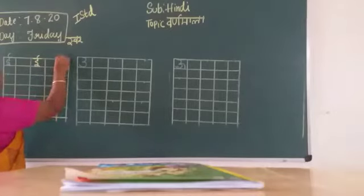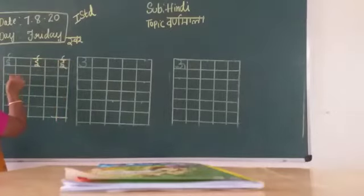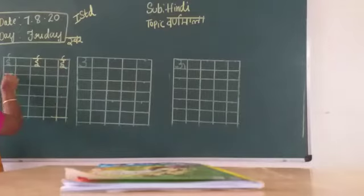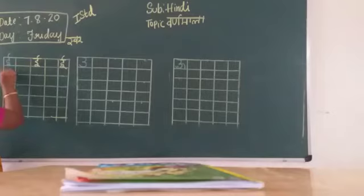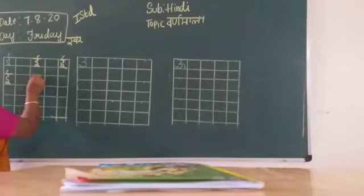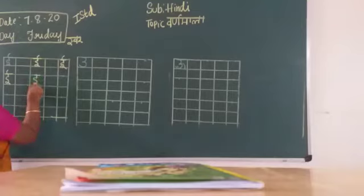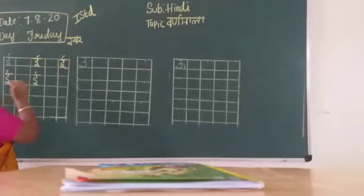E. How to write E? Touch, touch bottom line, come down, again down like this. What is this? E. What is this? E. Say right children, sleeping line and come down, touch down line and write E. What is this? E.